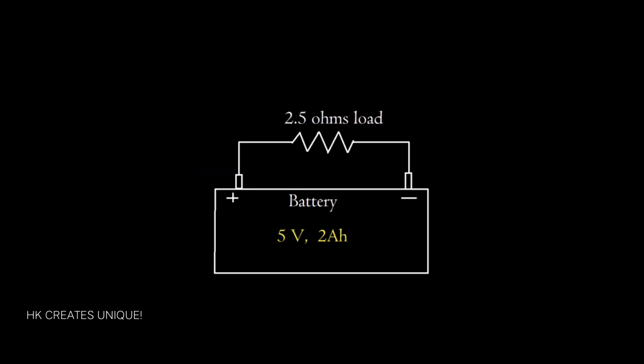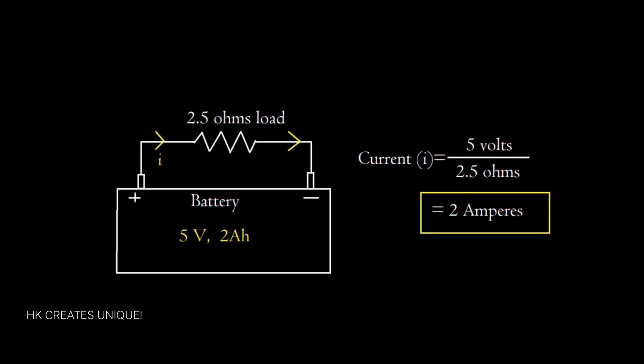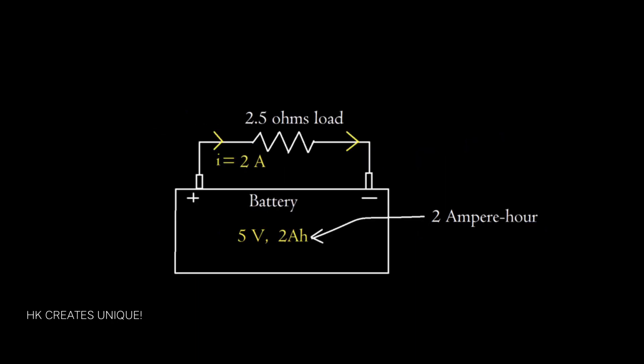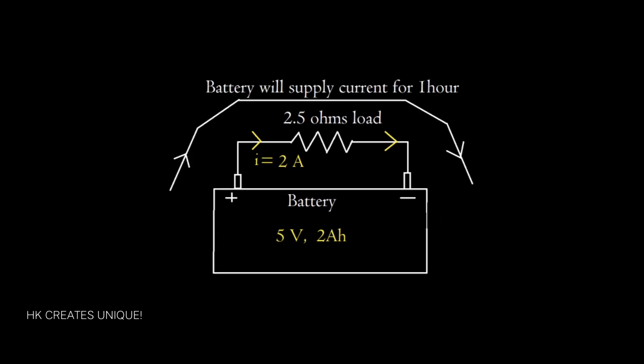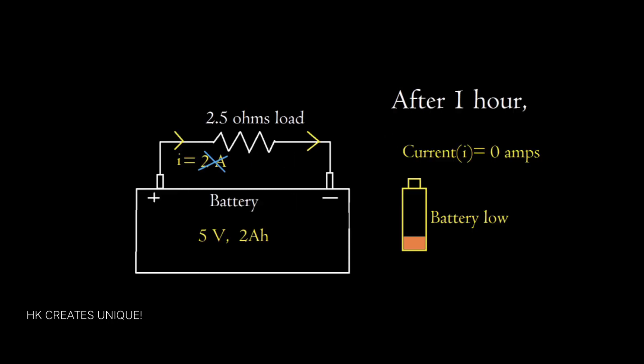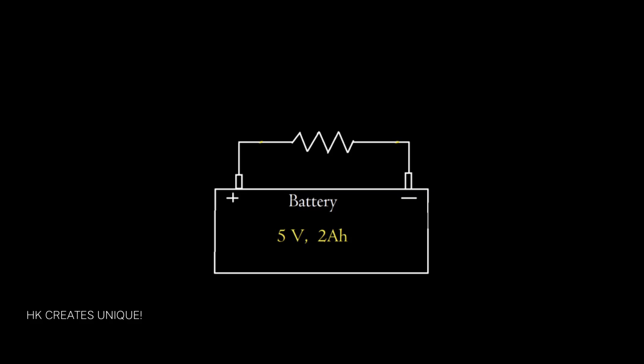If I connect a load of 2.5 Ohms resistance, then using Ohm's law, we can find the current through the load. Current equals 5V divided by 2.5 Ohms, which equals 2A. Since the battery has a capacity of 2Ah, the battery will supply 2A for 1 hour. After 1 hour, the battery will no longer be able to supply current through the load.